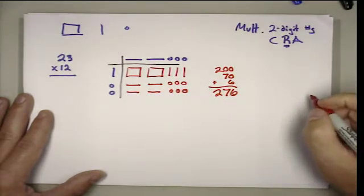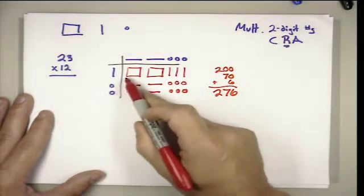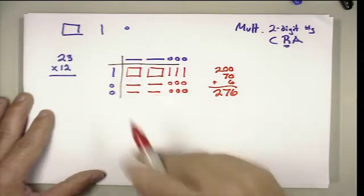And so that's one way to represent multiplication with an area model, and you can see how we would do this concretely with the actual place value blocks. This is the drawing that represents that.